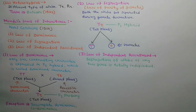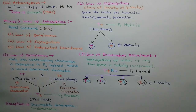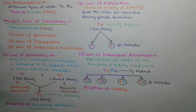According to the Law of Independent Assortment, segregation of alleles of one gene is totally independent from segregation of alleles of another gene. Thus, all types of new combinations can be made. This is due to crossing over. As shown in the diagram, four types of gametes are produced from a dihybrid progeny. Linkage is an exception of the Law of Independent Assortment.